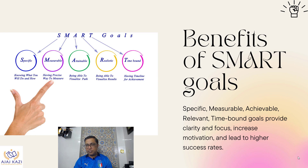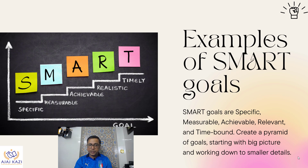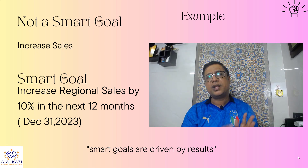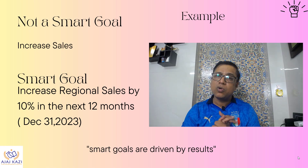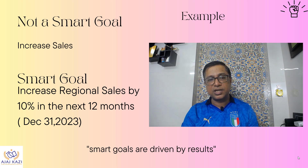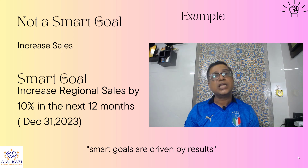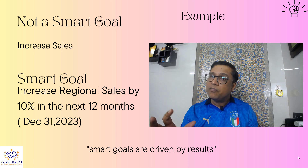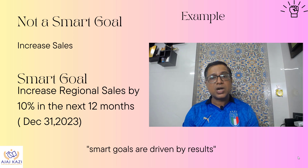So we have seen S, M, A, R, T — these are called smart goals: specific, measurable, achievable, realistic, and time-bound. For example, a vague goal would be 'increase sales,' but a smart goal would say 'increase regional sales by 10% in the next 12 months with a deadline of 31 December 2023.' Smart goals are driven by results.